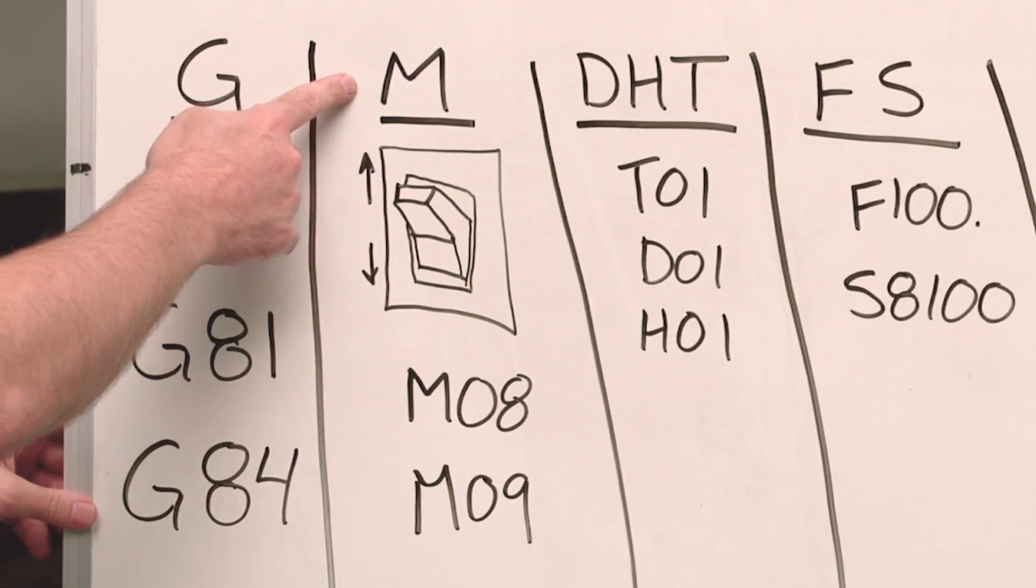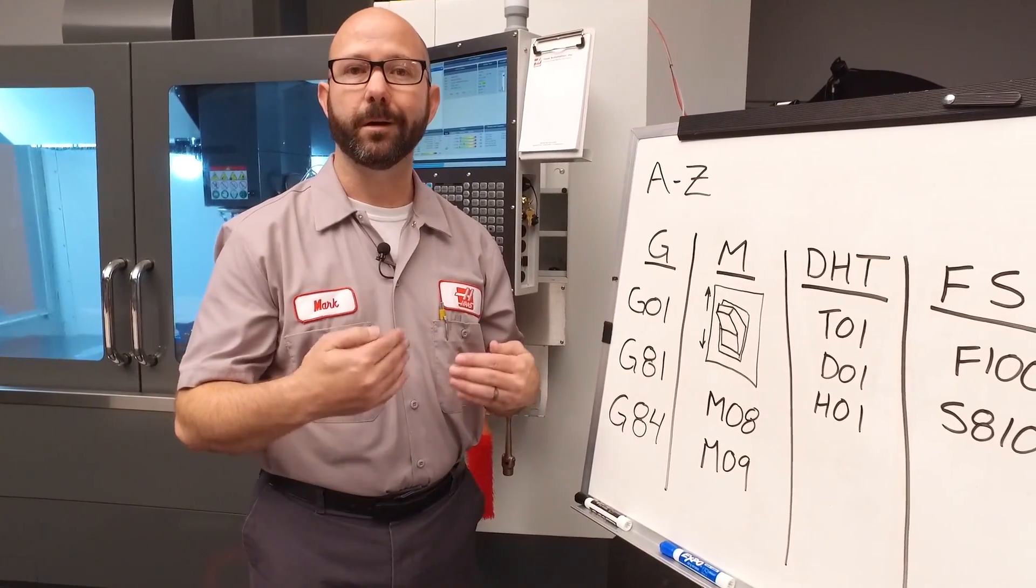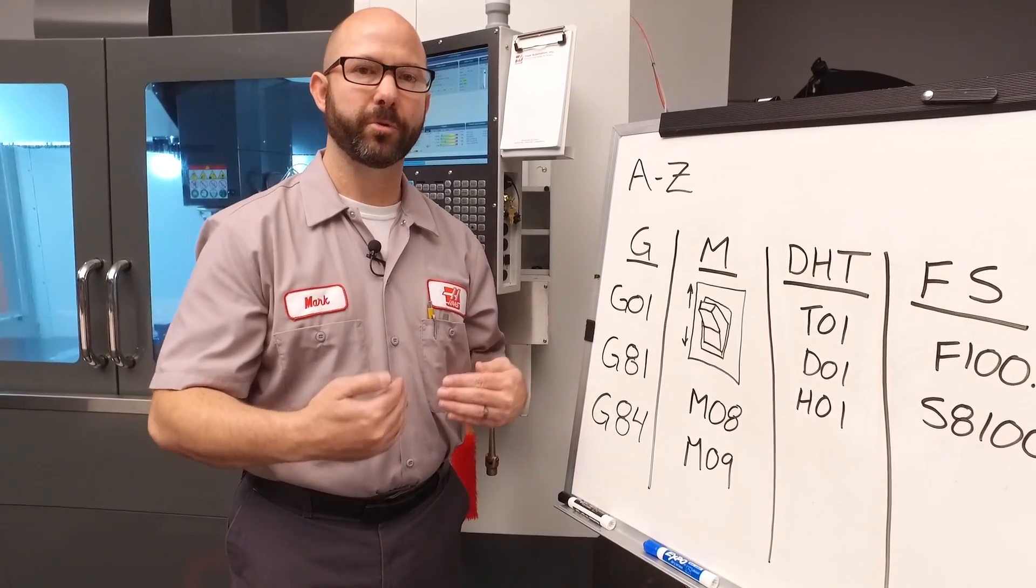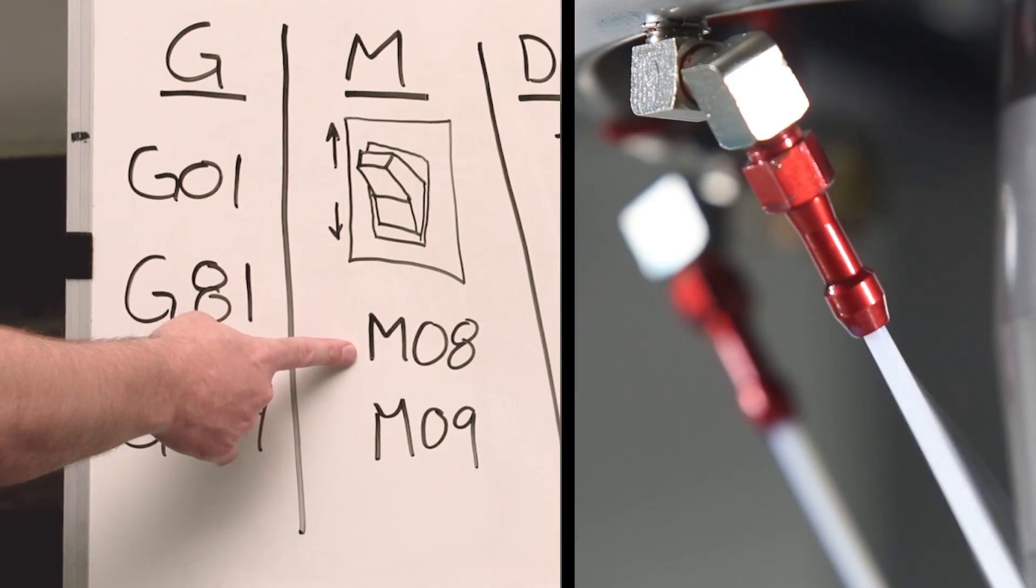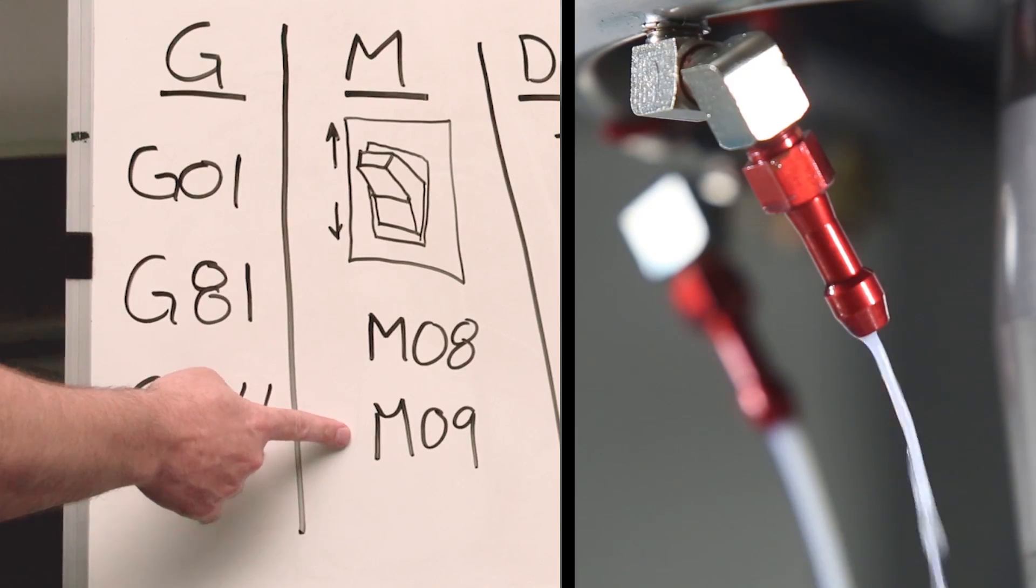M-codes are miscellaneous codes. They typically turn something on or off. They call a program, or they turn on a coolant pump, or turn off a coolant pump.